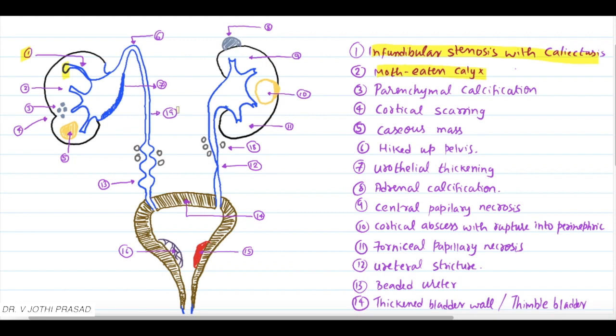The third is parenchymal calcification, which is the most common finding seen on plain x-ray abdomen. What you need to know is the type of calcification which occurs in the kidney as well as in the bladder. In the kidney, it is diffuse, uniform, extensive type of dystrophic calcification, whereas in the bladder it is speckled type of calcification.